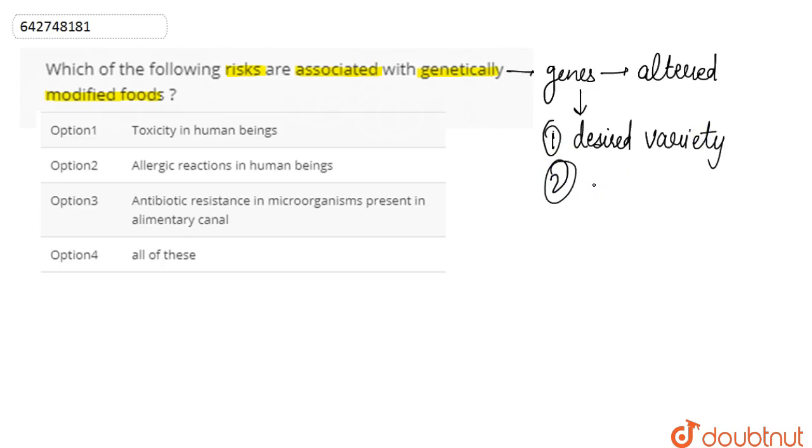is to produce high yield. Apart from this, to provide resistance to pest and insects. For this, certain toxic chemicals have been produced by the alteration of the gene and they could be even toxic to human beings.